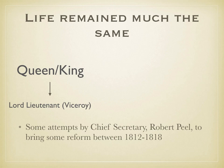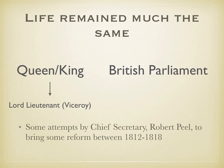There were some attempts at reform by Robert Peel, who was the chief secretary in Ireland, meaning he was the representative of the British Parliament. However, these reforms didn't deal with the biggest political issue of the time — Catholic emancipation — which was still denied to the Catholics.